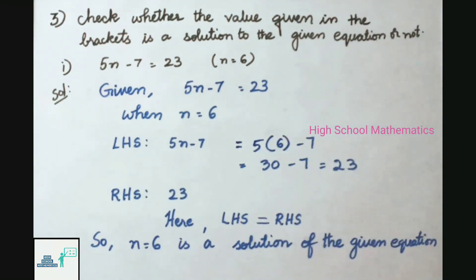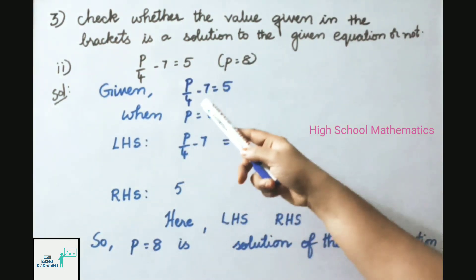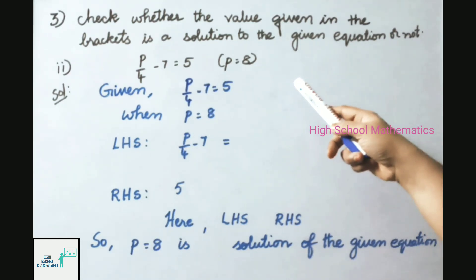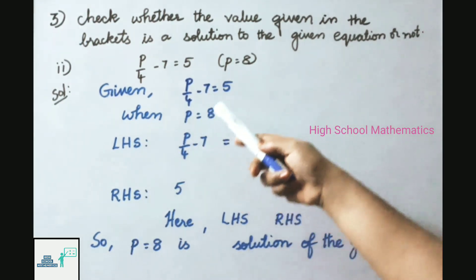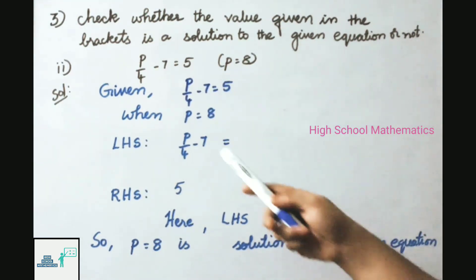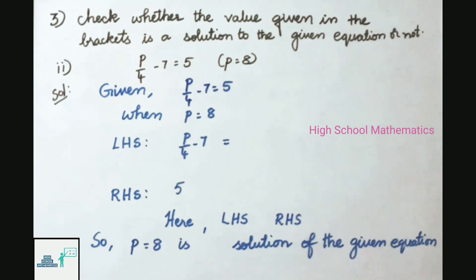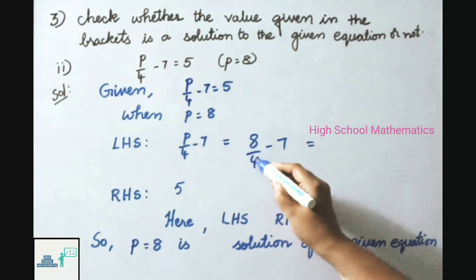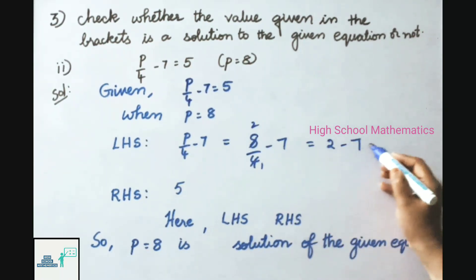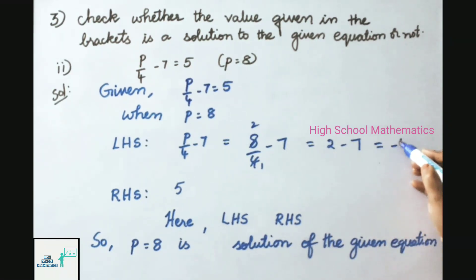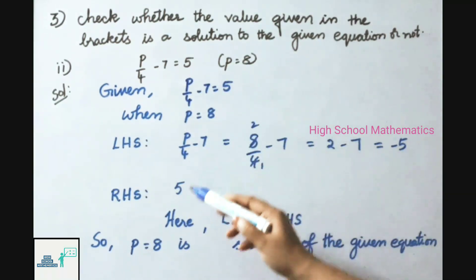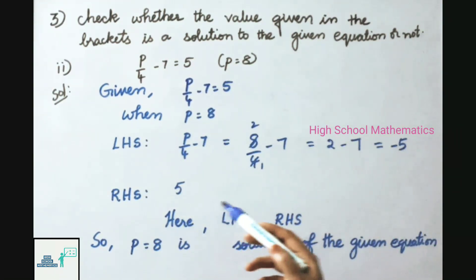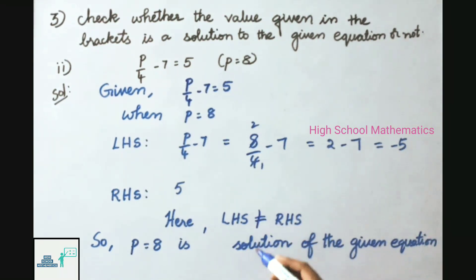Second sum: p/4 − 7 = 5, given p = 8. LHS = p/4 − 7 = 8/4 − 7 = 2 − 7 = −5. RHS = 5. Here −5 and 5 are not equal, so LHS is not equal to RHS. Therefore p = 8 is not a solution of the given equation.